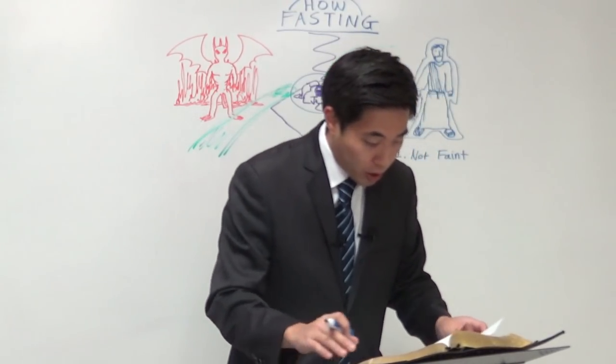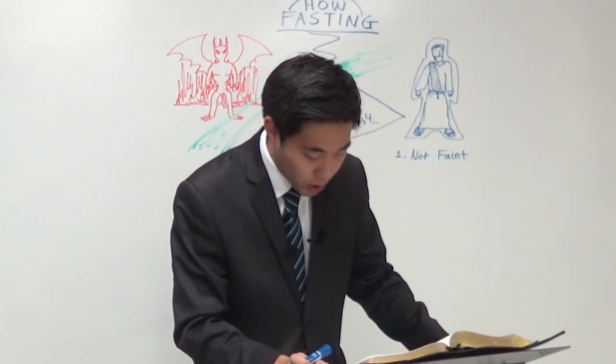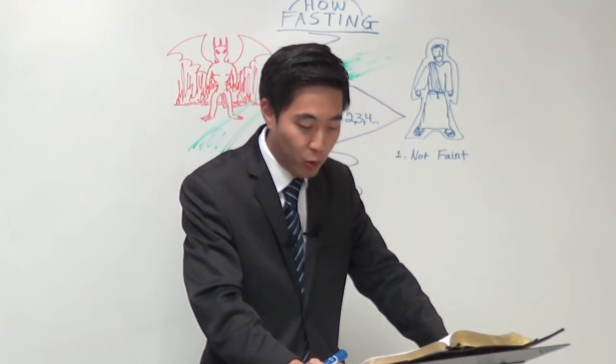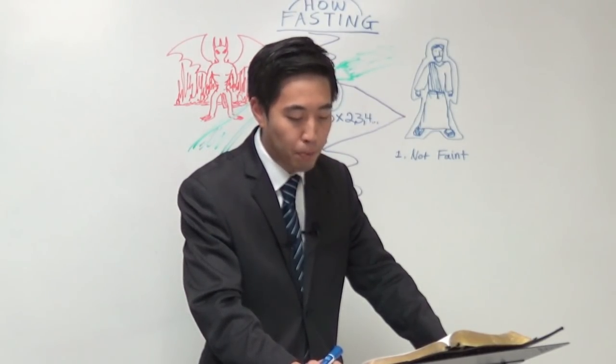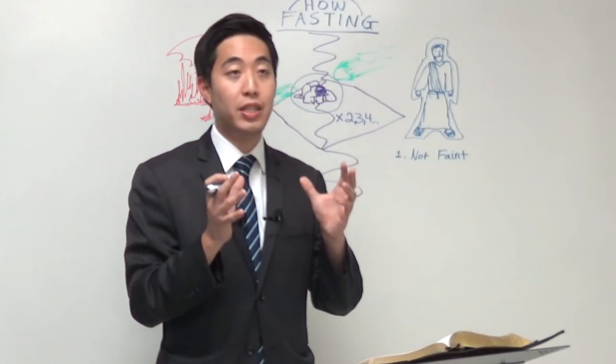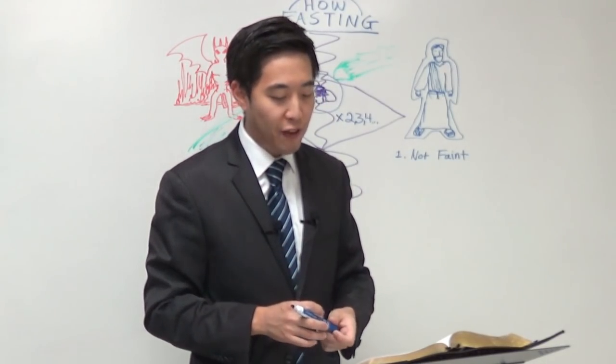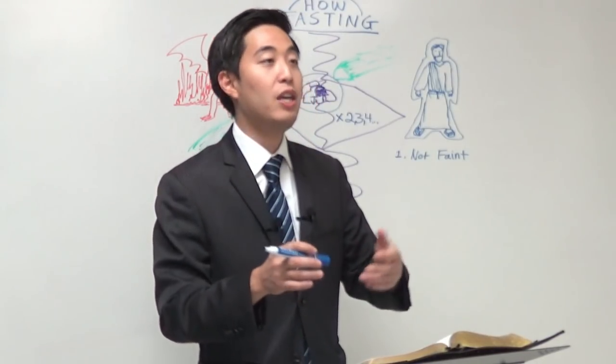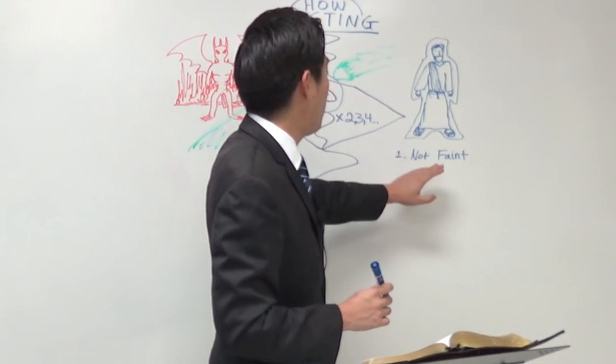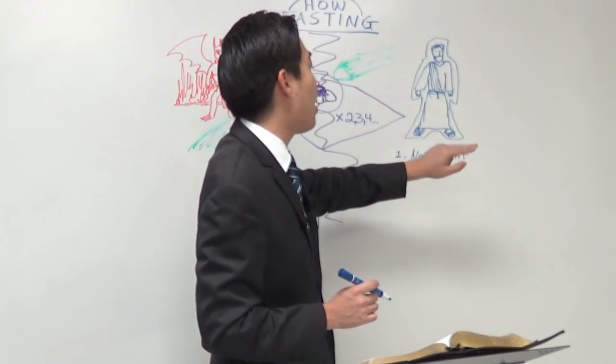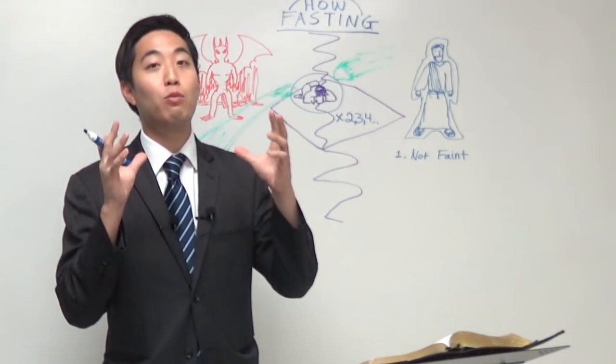We're going to look at the book of Mark, chapter 8. And then notice verse 3. And if I send them away fasting to their own houses, they will what? Faint by the way. Jesus is not against people who fast to a point where they faint by the way. That's why verse 2, he wanted to give them something to eat. Because remember, men always ought to pray and not what? If you faint when you pray, then the prayer doesn't work.